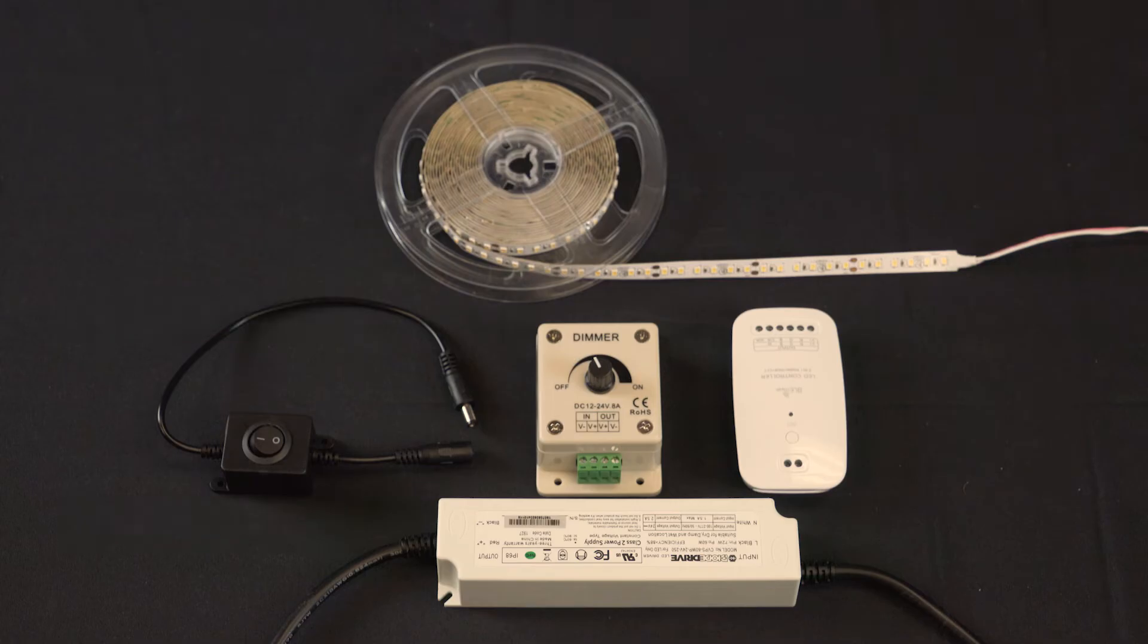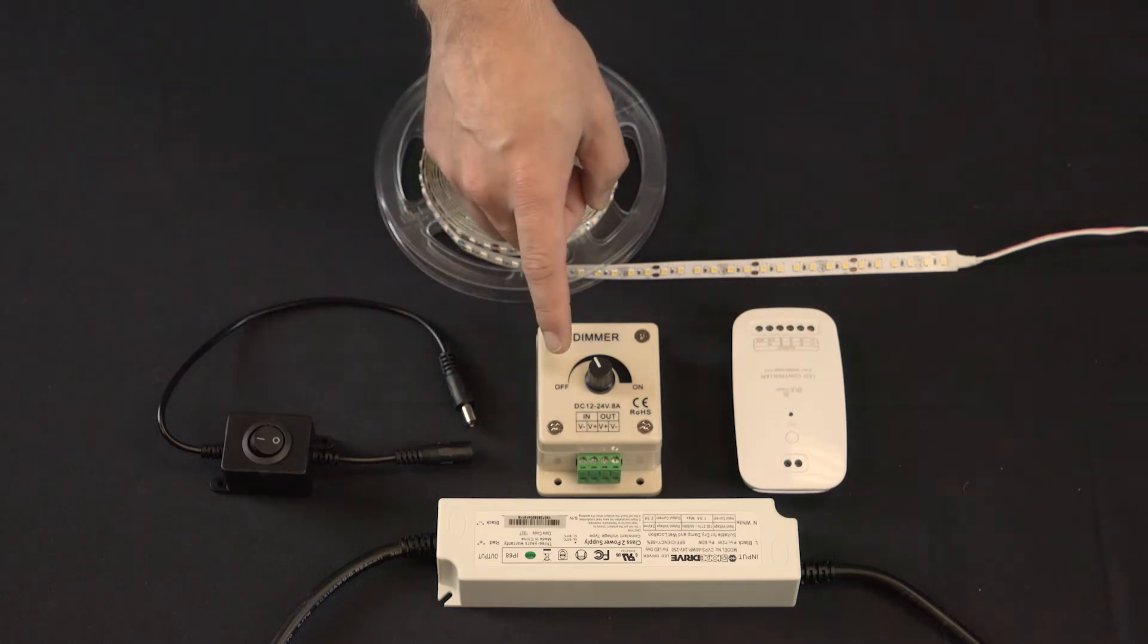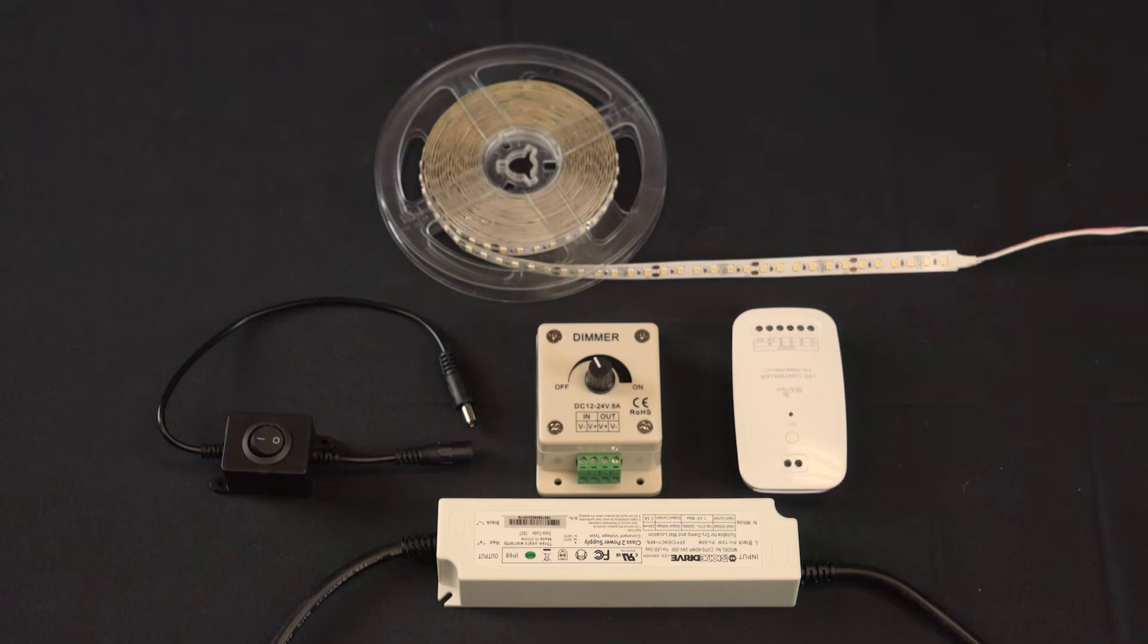The control device could be a physical option, such as this switch or this dimmer, or it could be a wireless solution, such as a Bluetooth controller.